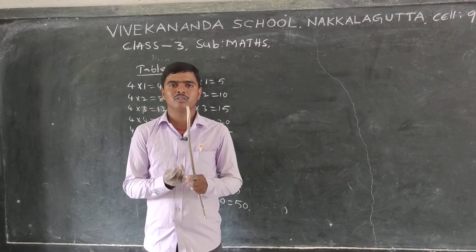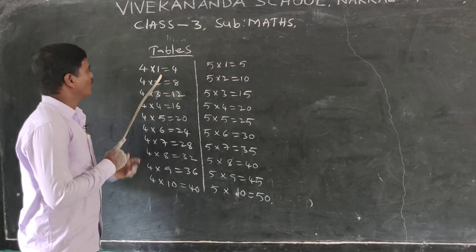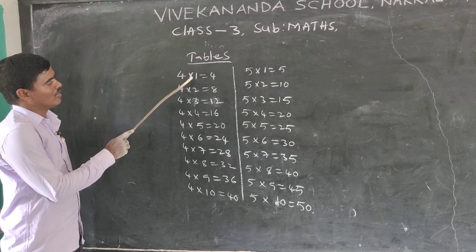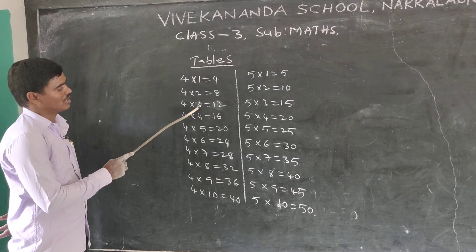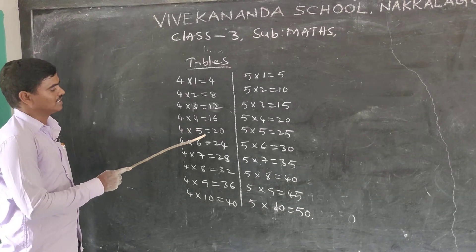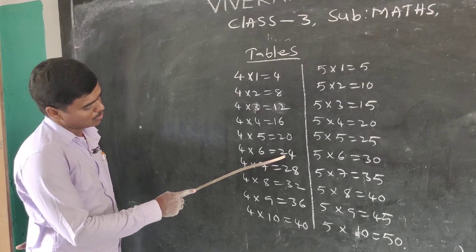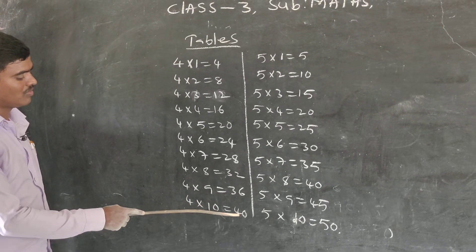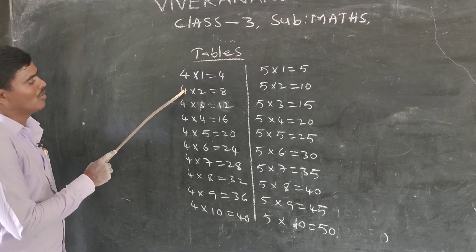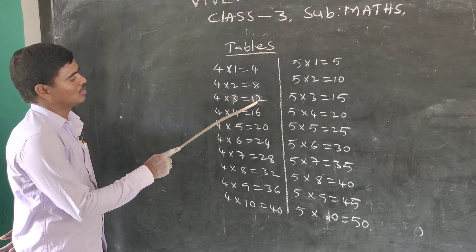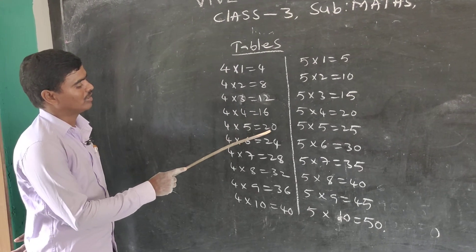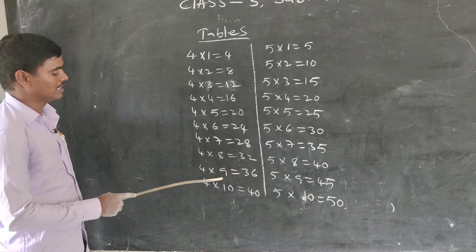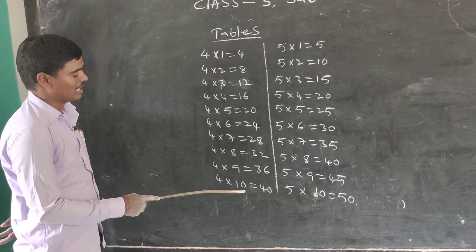Last class, read the 2 and 3 tables. Now, 4 table and 5 table. First, read the 4 times table: 4 ones are 4, 4 twos are 8, 4 threes are 12, 4 fours are 16, 4 fives are 20, 4 sixes are 24, 4 sevens are 28, 4 eights are 32, 4 nines are 36, 4 tens are 40.